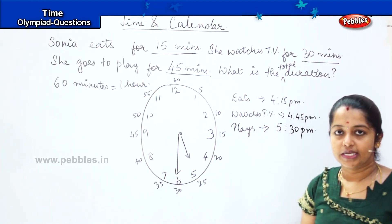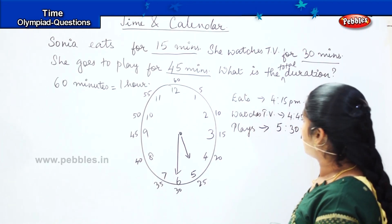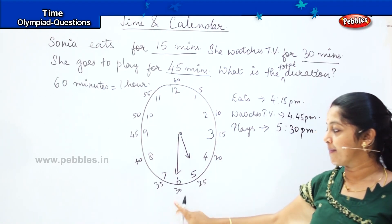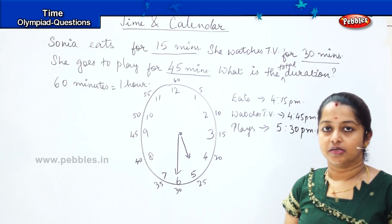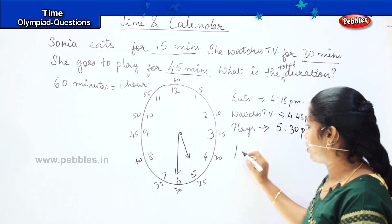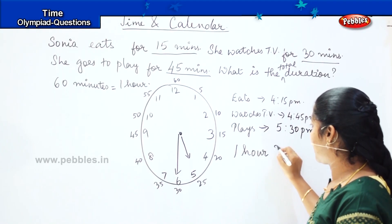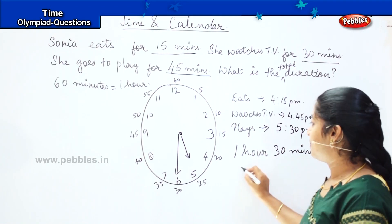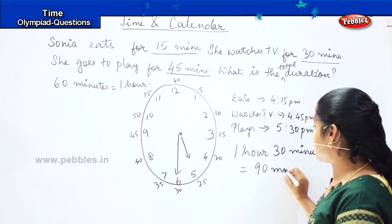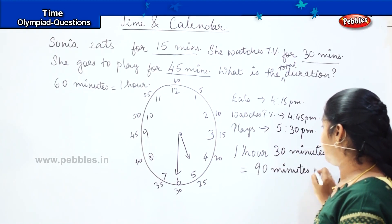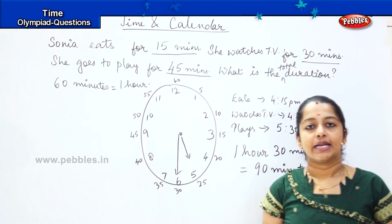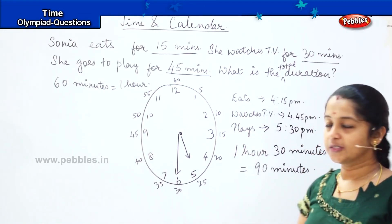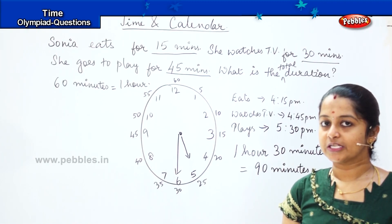At 5:30 she is back home. So what is the total duration which she has completed, children? Starting from 4, she has completed her tasks at 5:30, which means she has taken a total duration of 1 hour and 30 minutes, which is nothing but 90 minutes. She has relaxed herself and enjoyed herself. Are you clear with this pattern of questions? Shall we move to the next pattern? See you next time.